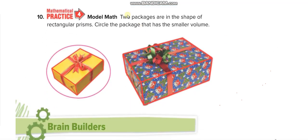Okay, here. Two packages are in the shape of rectangular prisms. Circle the package that has the smaller volume. So of course, smaller volume: this is the smallest one, so of course it has the smaller volume.